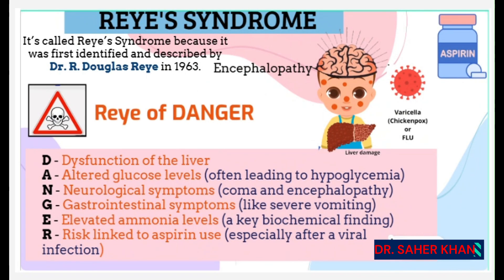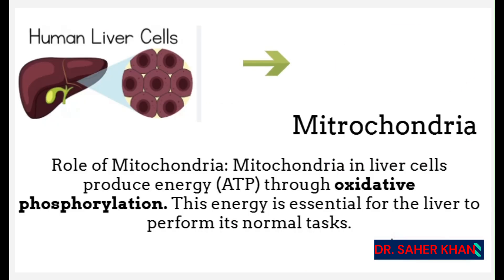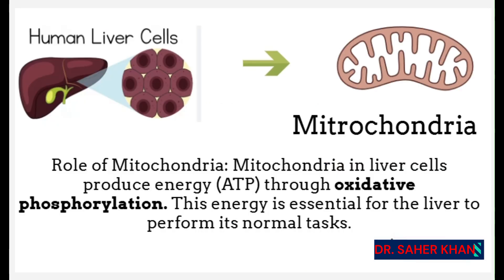Reye's syndrome is a rare but serious condition that primarily affects children. It causes damage to the brain and liver. But how does this happen?